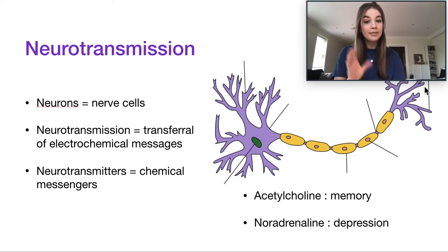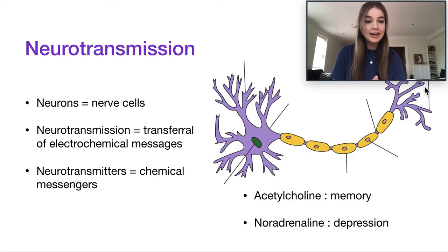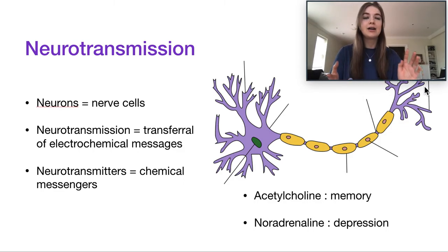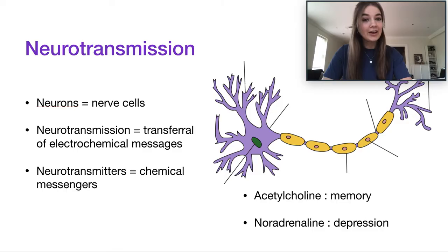Neurotransmitters pass from the terminal buttons, across the synapse, to the next neuron. If that neurotransmitter is blocked or changed in any way, the message will change. It's a very specific process that can affect our thoughts, mood, and behavior. There are many neurotransmitters — from serotonin to acetylcholine, dopamine, and noradrenaline. Today we'll specifically talk about acetylcholine and noradrenaline.